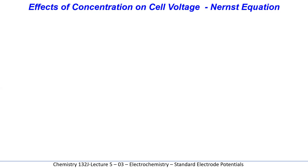Welcome everyone to today's lesson. Yesterday we learned how to calculate the voltages of galvanic cells. Today we're going to learn how concentrations affect those voltages in a relationship developed by a man named Nernst, and therefore it's called the Nernst equation.